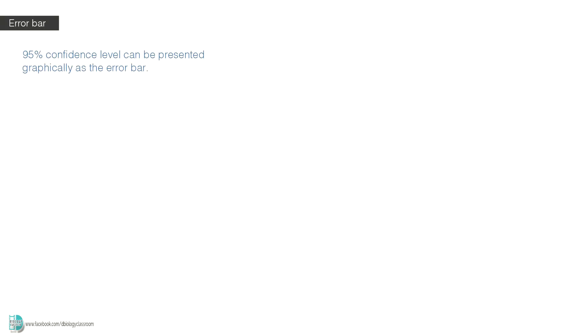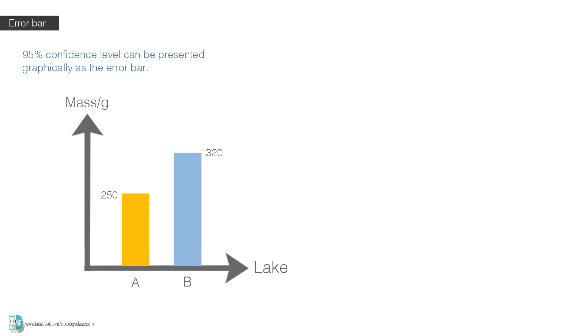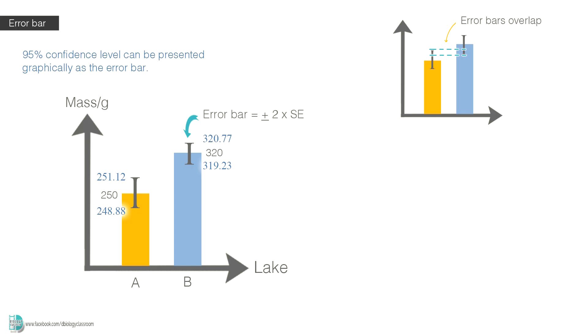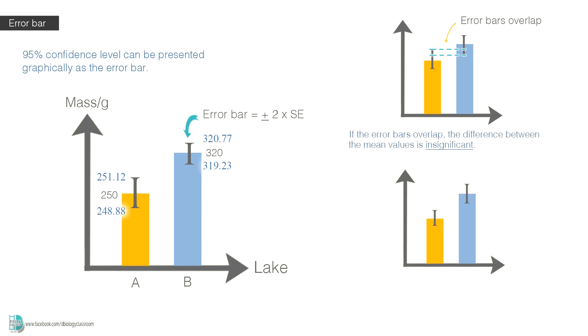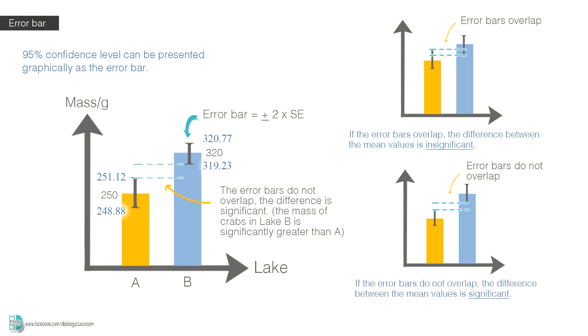The 95% confidence level can be presented graphically as the error bar. Let's plot the sample mean for A and B into a graph. To include the error bar, simply plus and minus 2 times the standard error for both samples. The error bar can be used as an indicator to tell if the difference between the two sample means is significant or not. If the error bars overlap, the difference between them is insignificant. If the error bars do not overlap, the difference between them is significant. In our example, the error bars between the two sample means do not overlap.